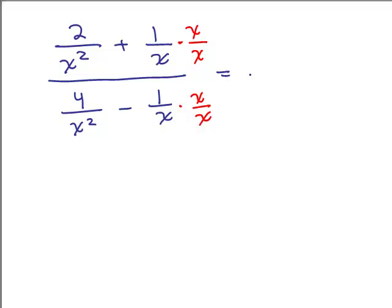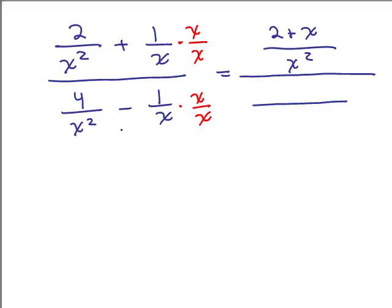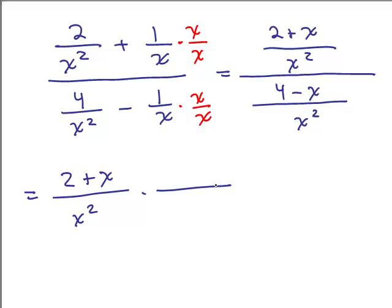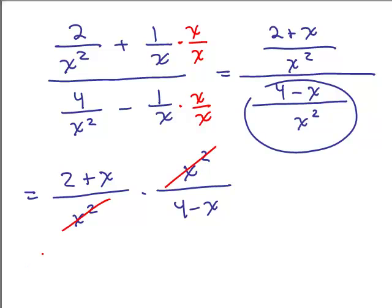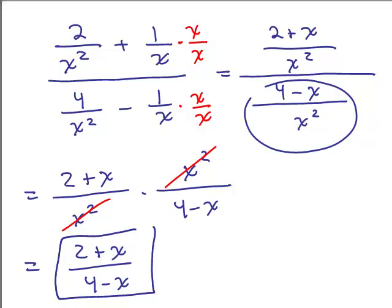The denominator also just happens to be X squared — that might not always happen. In the numerator, with a common denominator of X squared, I can add the numerators: 2 plus X. In the denominator, I have X squared with numerator 4 minus X. Now it's written as a single fraction in the numerator and a single fraction in the denominator. The next step is to take 2 plus X over X squared and multiply by the reciprocal, which is X squared over 4 minus X. The X squared cancels and we get exactly the same answer.